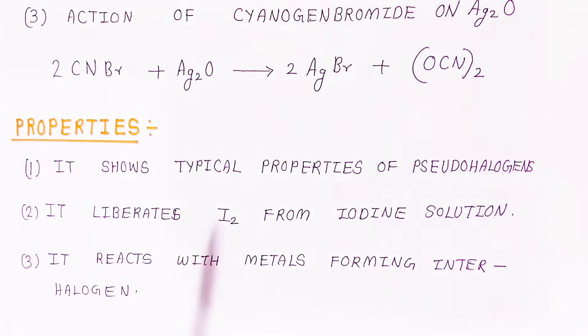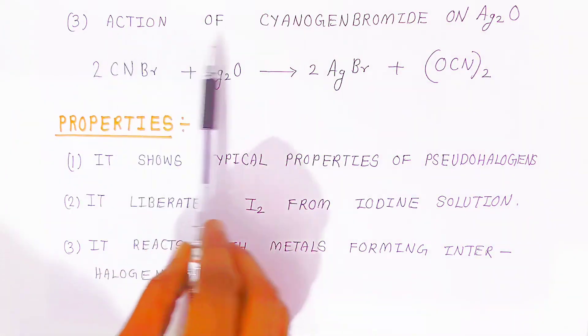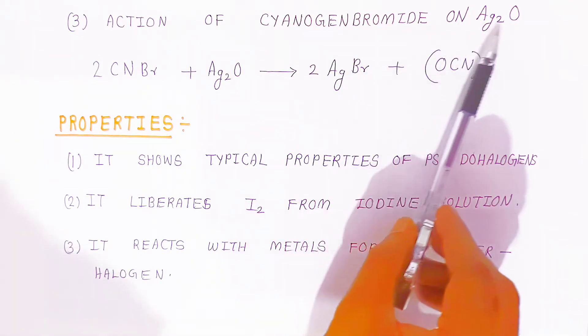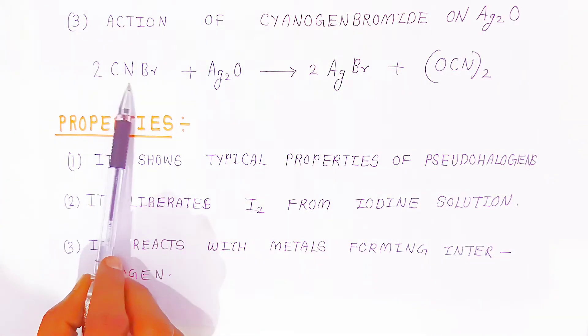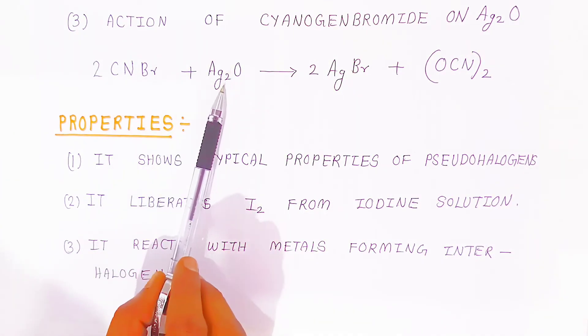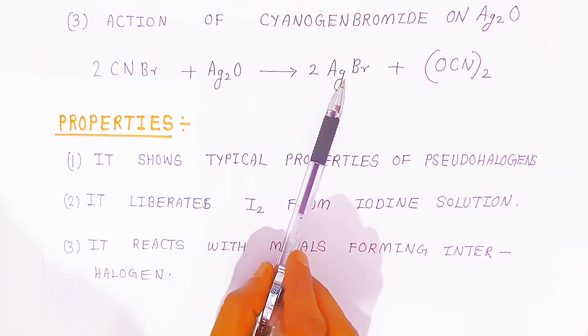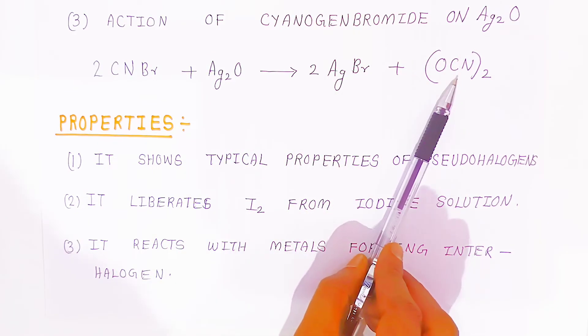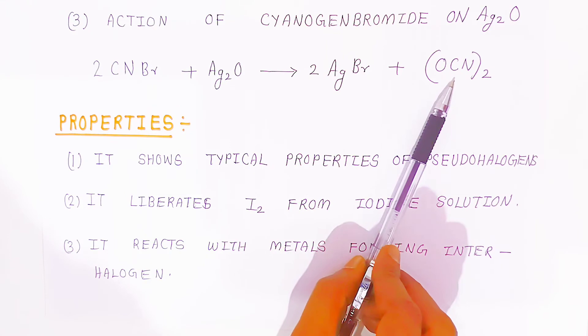Third preparation: action of cyanogen bromide on silver oxide. When it reacts with Ag₂O, you are getting silver bromide and oxycyanogen. So these are the three ways we have prepared oxycyanogen.